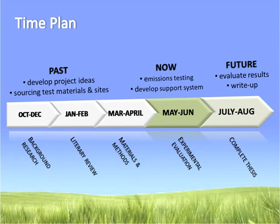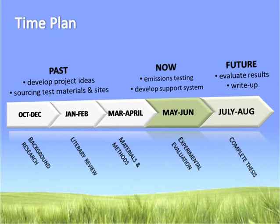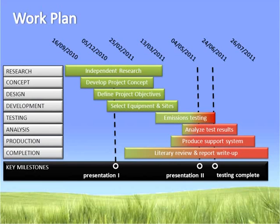Next, we're going to look at the time plan for this project. The project began in October. From October to February, I began independent research and selected my project, and also started my literary review. Then from March until June, I arranged the on-site testing dates, began testing and started using the software for developing the support system. From July until August, I'm going to complete testing and then complete writing up my thesis. I've also translated the time plan into a more detailed work plan by creating a Gantt chart to help me manage my time better and keep me focused on getting the tasks done.